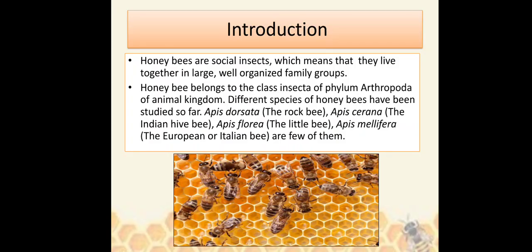Introduction: Honeybees are social insects, which means that they live together in large, well-organized family groups. Honeybees belong to the class Insecta of Phylum Arthropoda of the Animal Kingdom. Different species of honeybees have been studied so far: Apis dorsata, the rock bee; Apis serena, the Indian hive bee; Apis floria, the little bee; and Apis mellifera, the European or Italian bee, are a few of them.